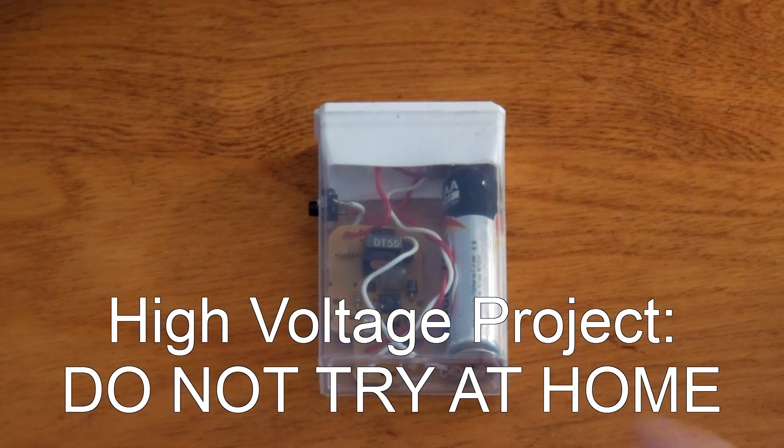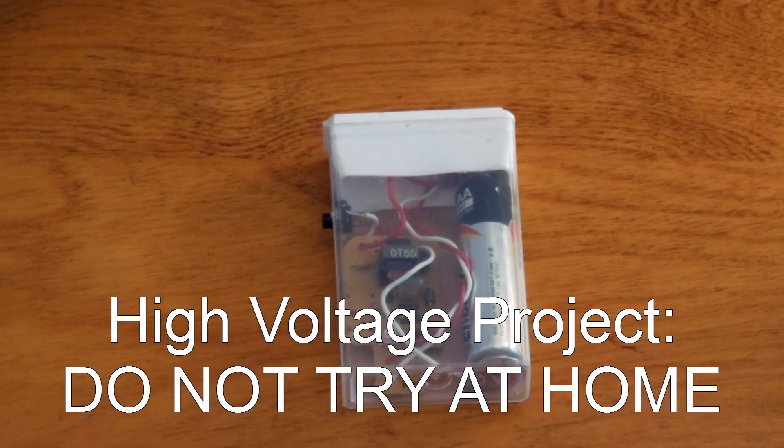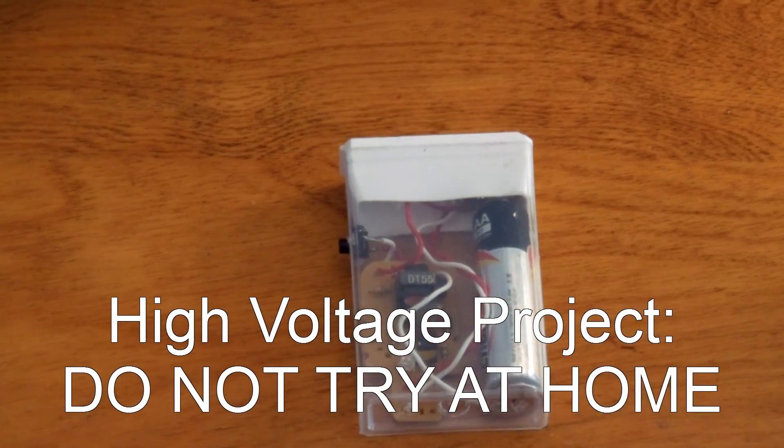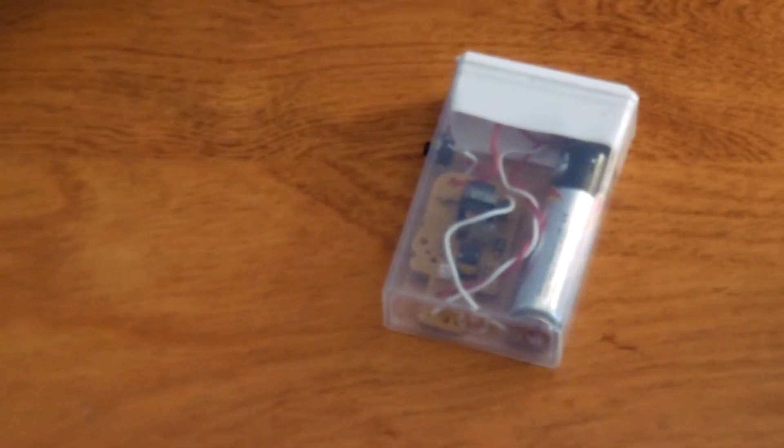Some of you may recognize this. This is the Tic Tac Taser. As you see here, it puts out about 300 volts using an old disposable camera circuit board. Press the button, lights up, 300 volts. This was cool but not very powerful.